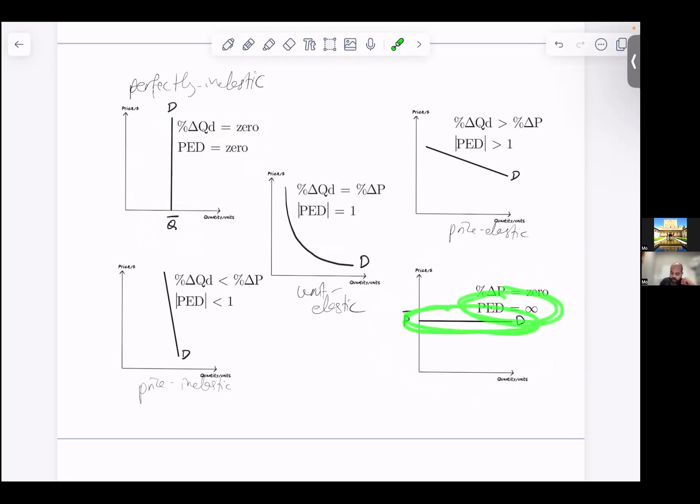So you've got perfectly inelastic, a vertical curve; price inelastic, a relatively steep curve; unit elastic, it has to look like a rectangular hyperbola.